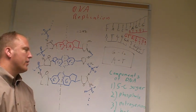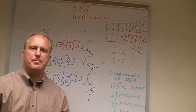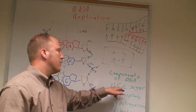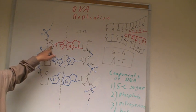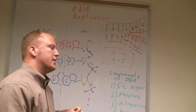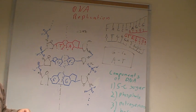That's right, there's a five carbon sugar shown here and it's called what? That's right, deoxyribose.